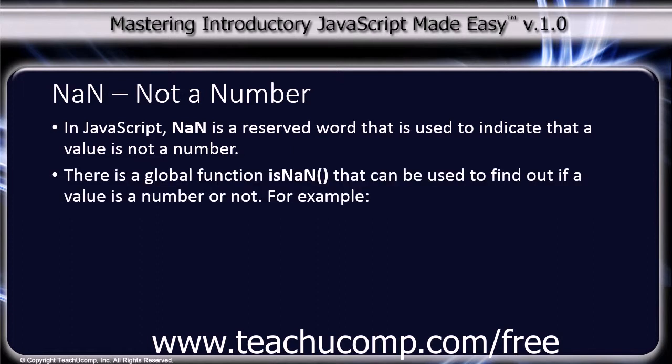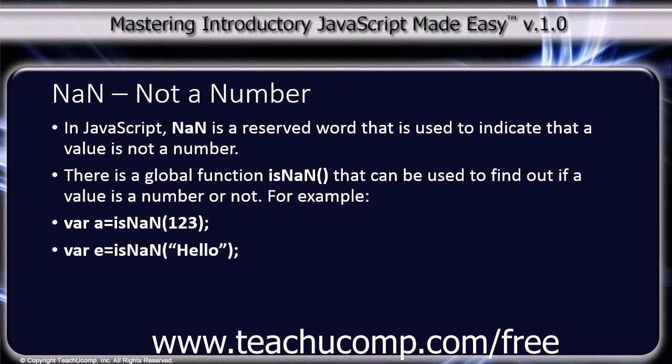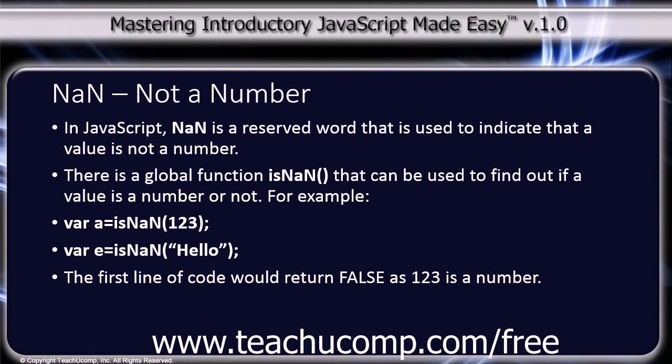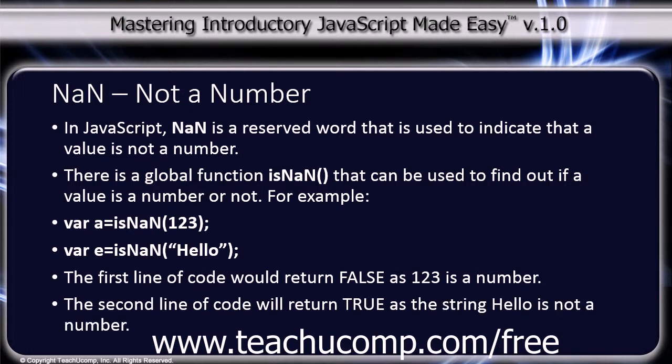There is a global function isNaN that can be used to find out if a value is a number or not. For example, var a equals isNaN(123), var e equals isNaN('hello'). The first line of code will return false as 123 is a number. The second line of code will return true as the string 'hello' is not a number.